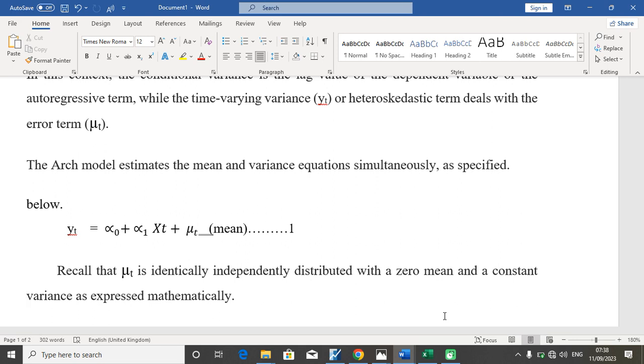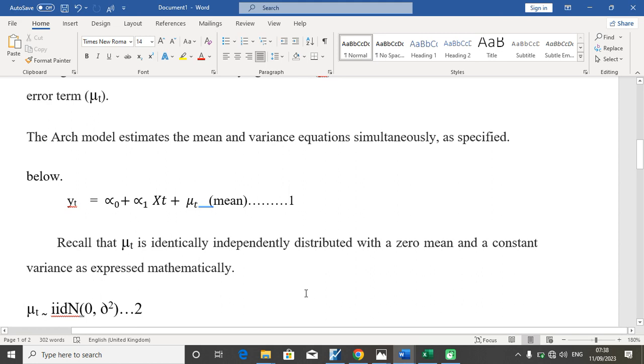So in the mean equation, we have the mean equation estimation or specification as presented in equation one. We have Yt, which is the dependent variable, as a function of a constant term and an independent variable plus the error term.